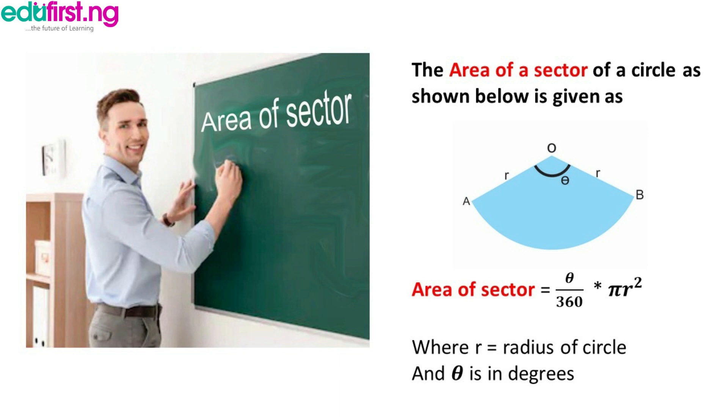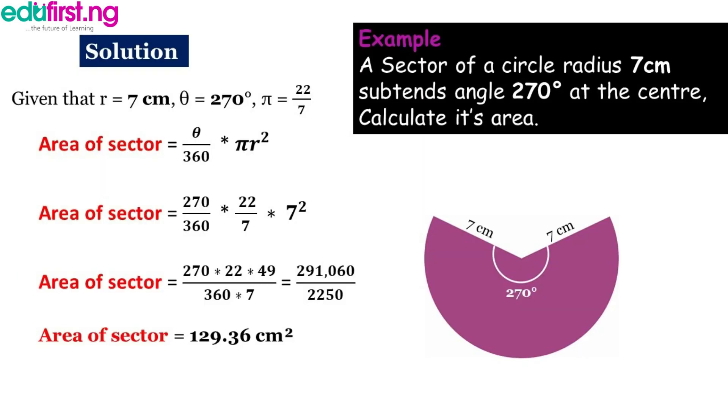Pi is actually a constant and it is given as 22 over 7. So let's get an example quickly so that we understand it better. A sector of a circle radius 7 cm subtends angle 270 degrees at the center, calculate its area. So it's very simple, the angle is actually a reflex angle. So whether it's a reflex angle or an obtuse angle the formula still remains the same, so you have no worries about that.